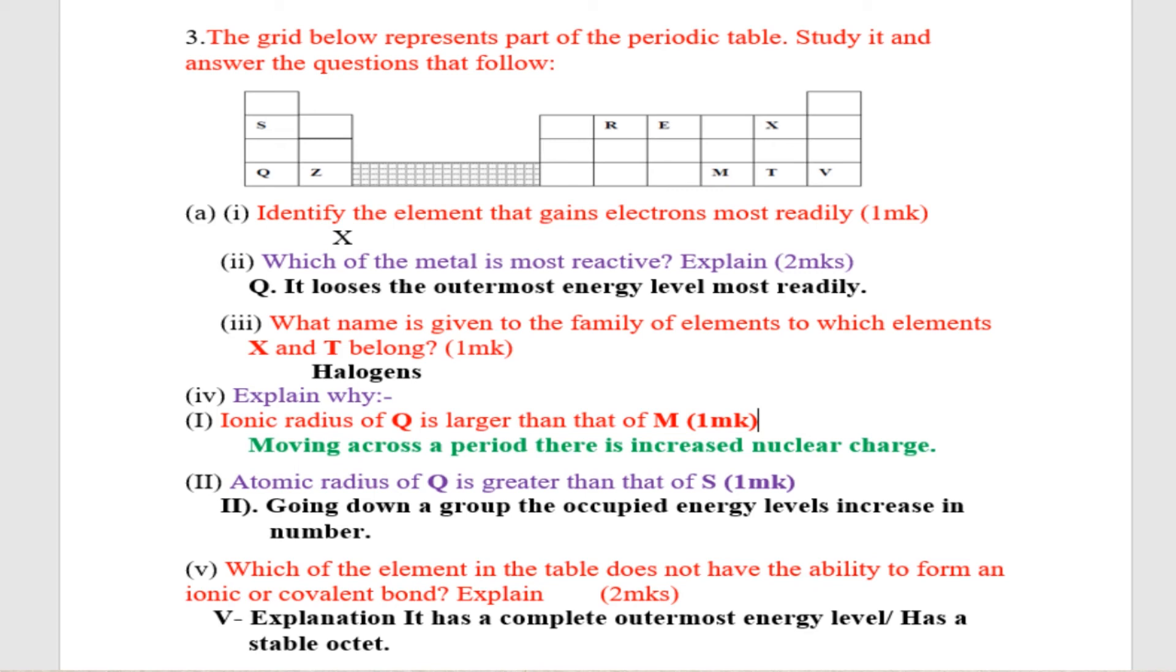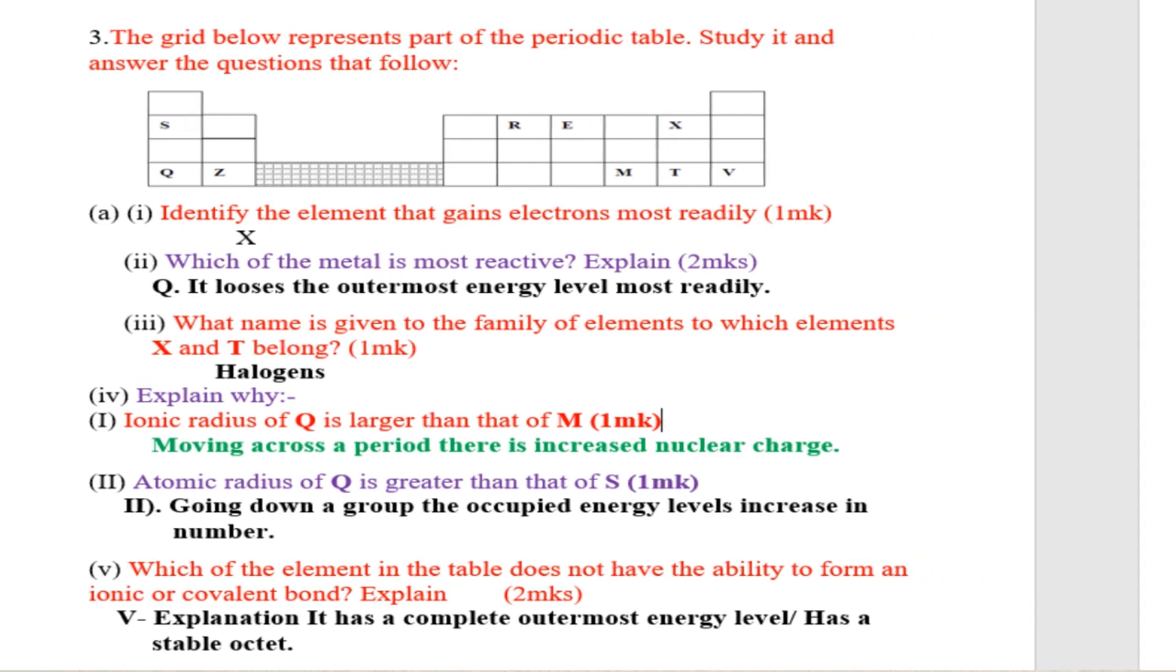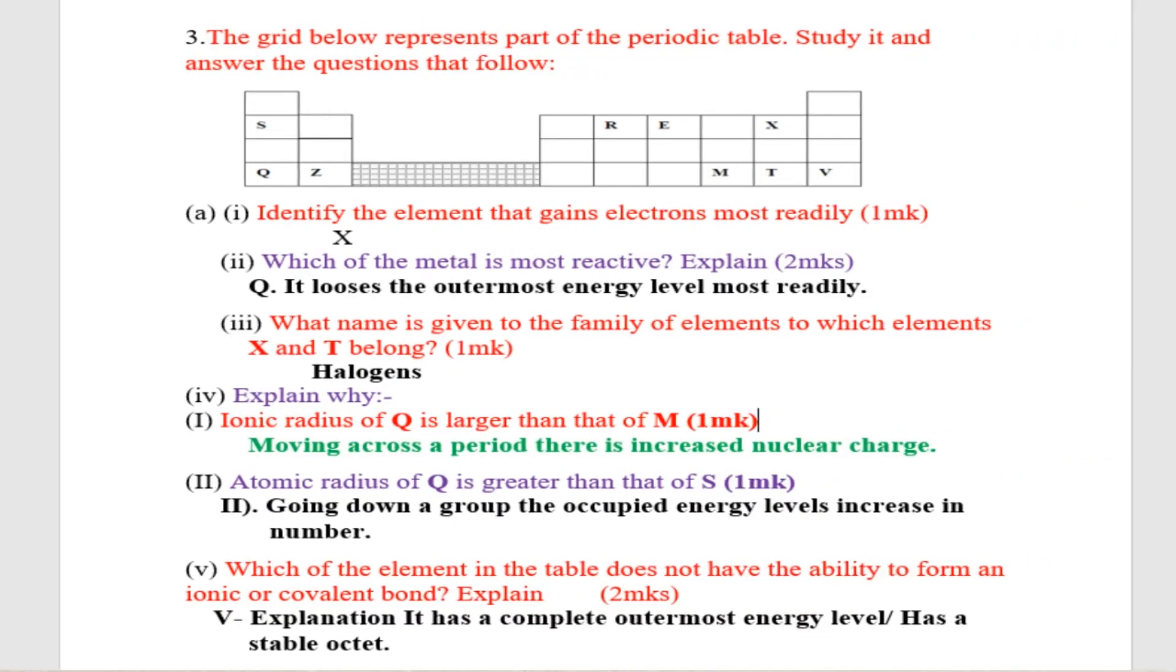Atomic radius of Q is greater than that of S. Going down the group, the occupied energy levels increase in number.